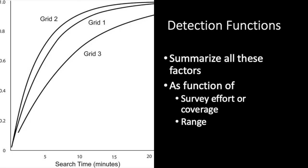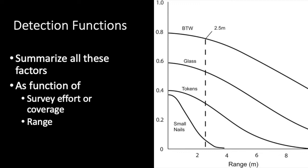We can actually summarize all these factors mathematically with something called detection functions. One kind of detection function represents the relationship between search effort, as measured in search time or coverage, and the probability of detecting artifacts or sites or any other kind of target. The important thing to notice here is that this function not only varies from place to place, but it's non-linear, so that at some point investing more effort in search really doesn't accomplish anything. Another kind of detection function describes the relationship between discovery probability and range. The probability of detecting targets falls off with distance away from the detector, and how quickly it falls off depends on such things as visibility and artifact type.